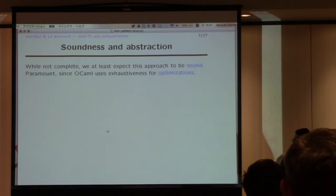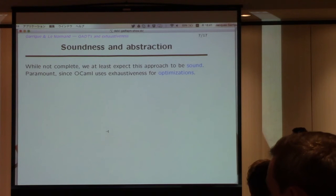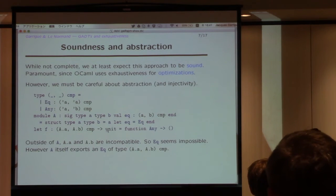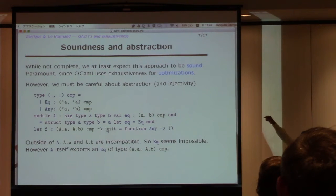As I told you, OCaml is using the exhaustiveness information for optimizations to get linear code, faster code. Then you don't want to get it wrong. And there is a major source of wrong choices, false negatives, I should say, that is due to abstraction. I think I've told that today in the workshop before. The idea is to take this type, which has an Eq case and an Any case. The Eq case is the left case, so the two parameters are equal, and the Any case is free.